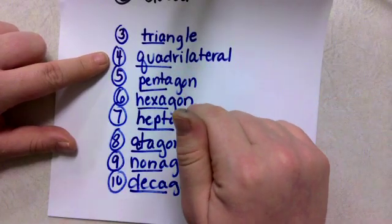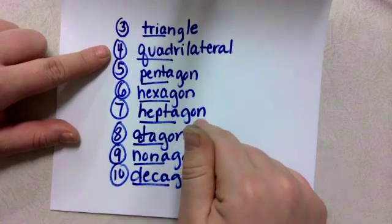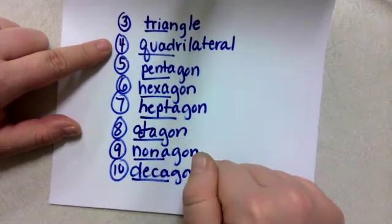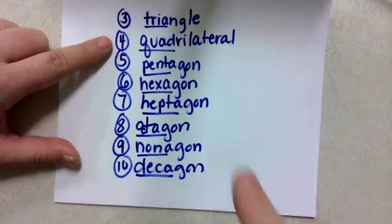Pentagon, five sides. Hexagon, six sides. Heptagon, seven sides. Octagon, eight sides. Nonagon, nine sides. Decagon, ten sides.